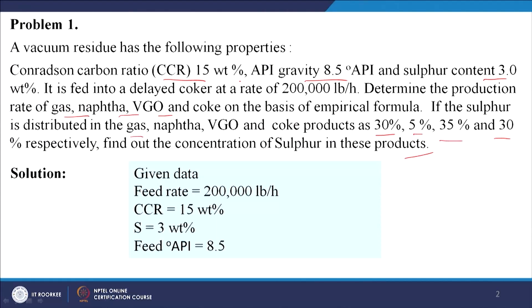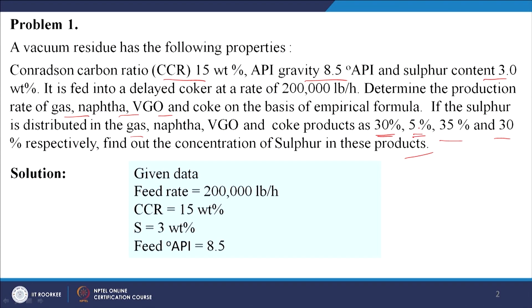We have to find out the sulfur content, and the relative amount of different products is already given: 30% for gas, 5% for naphtha, 35% for VGO, and 30% for coke.